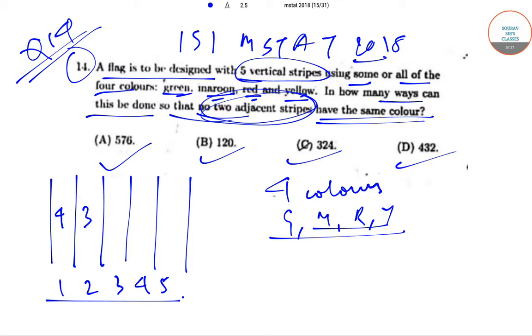After the second stripe is colored, we'll have three more colors because the third stripe cannot have the same color as the second stripe. So we'll be having to choose from three colors. So for stripe three we have three colors and similarly for stripe four we have three colors and stripe five we also have three colors.